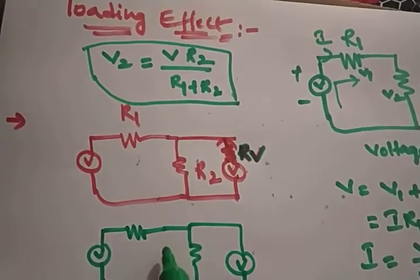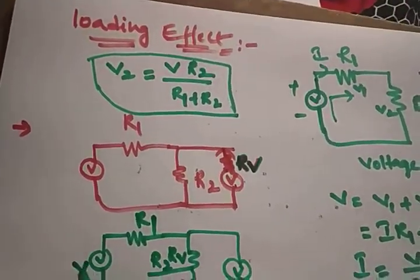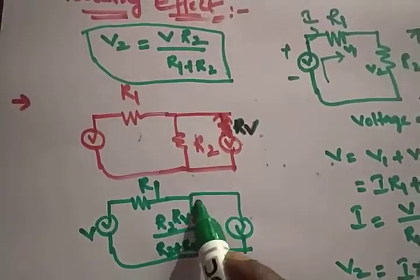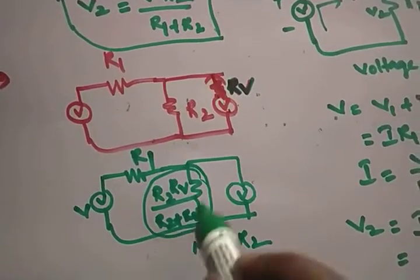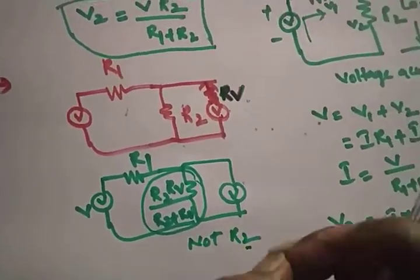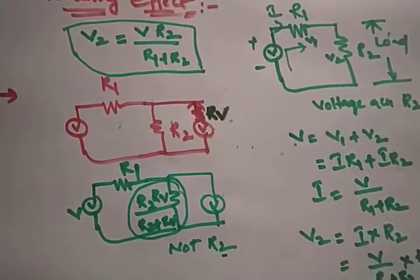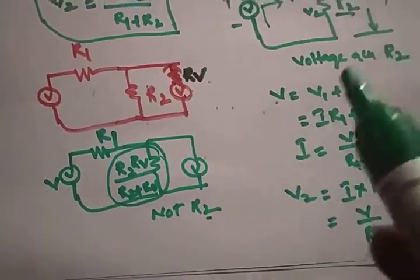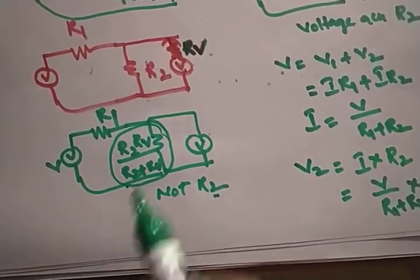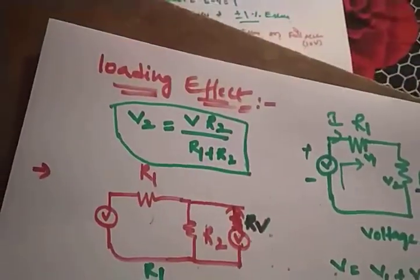The voltage measured is V · (R2 ‖ Rv) / (R1 + R2 ‖ Rv), where R2 ‖ Rv = R2·Rv / (R2 + Rv). So you are measuring the voltage across the equivalent parallel resistance, not just R2. The difference between the true voltage across R2 and the measured voltage is the loading error.